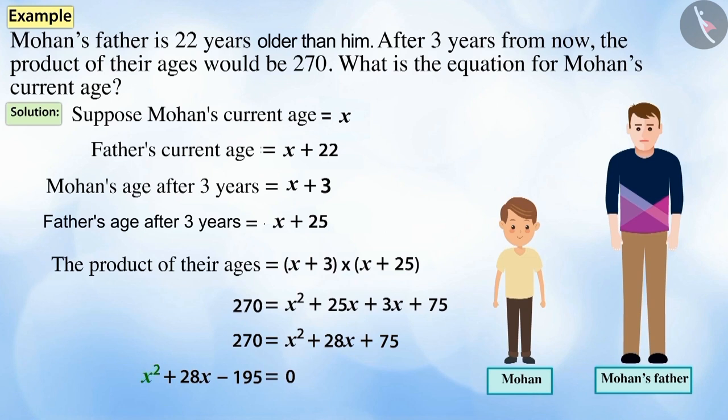We get x² + 28x - 195 = 0. Therefore, Mohan's present age satisfies the equation x² + 28x - 195 = 0.